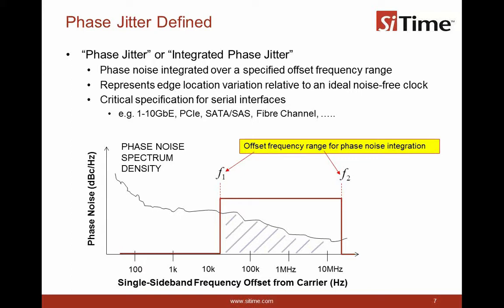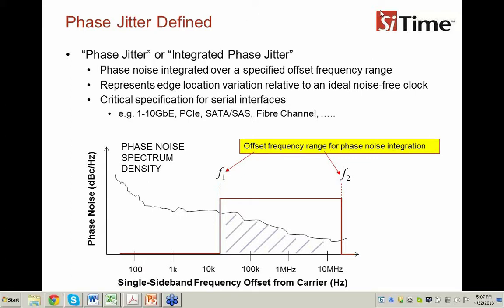This type of measurement typically is relevant to, as we said, serial interfaces, 10 gigabit Ethernet, PCIe, SATA or SAS, and so on. And then the offset frequency, F1 to F2, is a function or is established by the specific application. Is that true? That is correct.